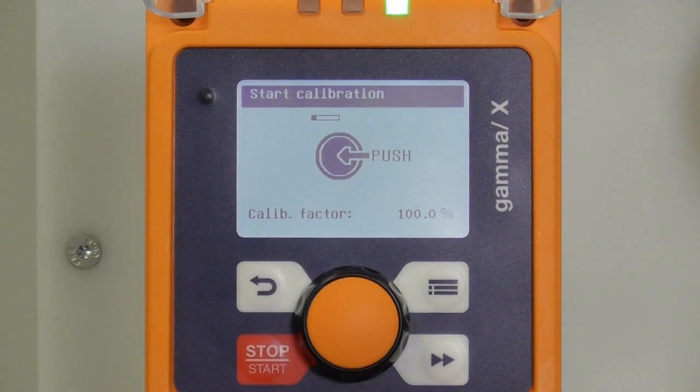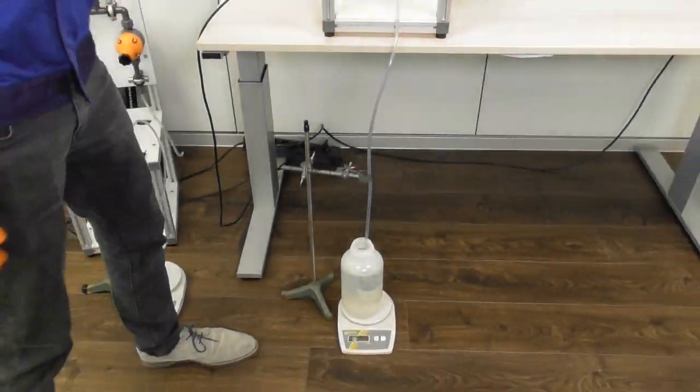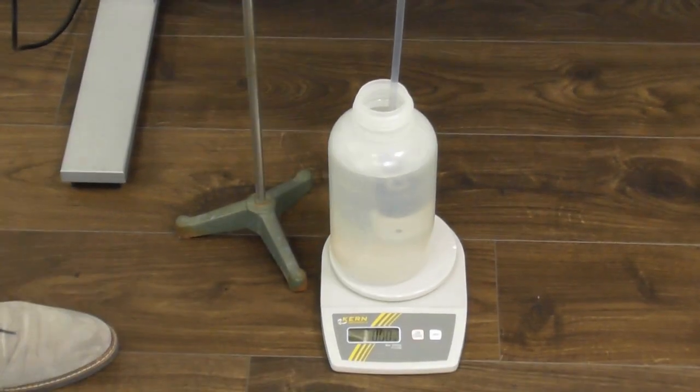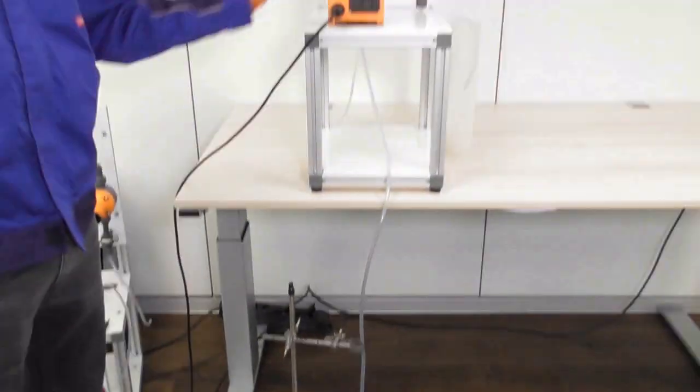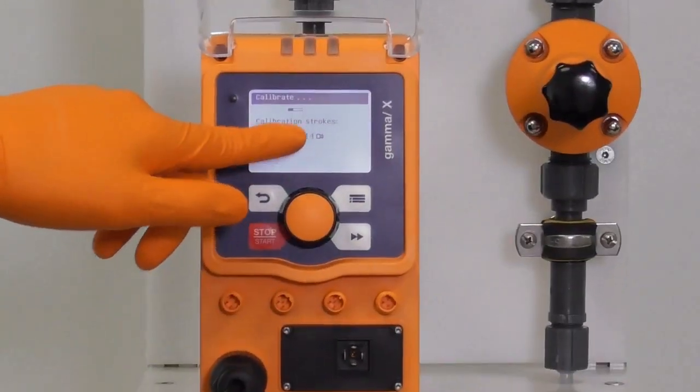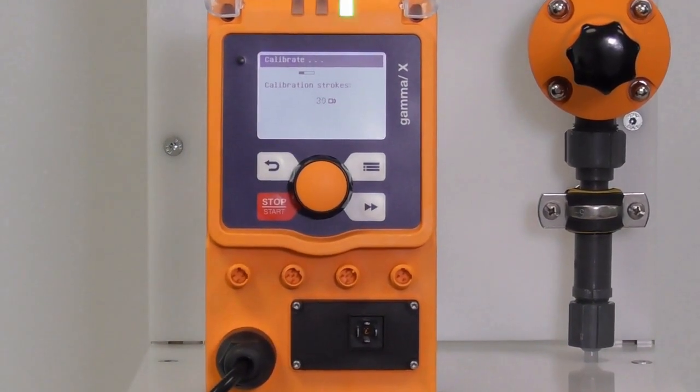And here we have our scale. And as I said before, always calibrate from the suction side. And now the scale is on zero and I start a calibration process. It is really important that the pump is pumping at least 200 strokes.